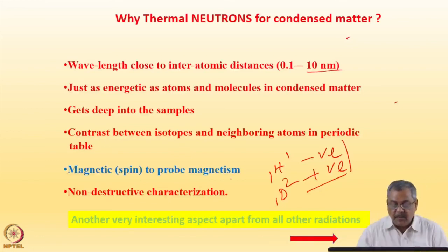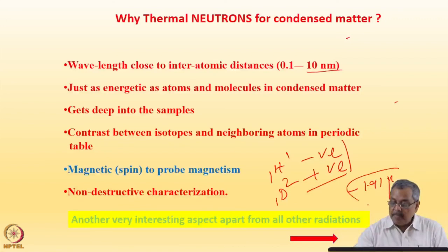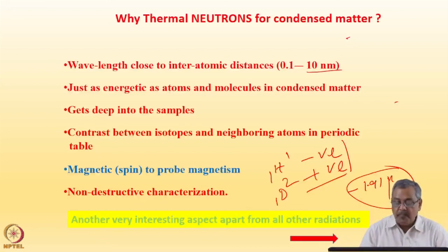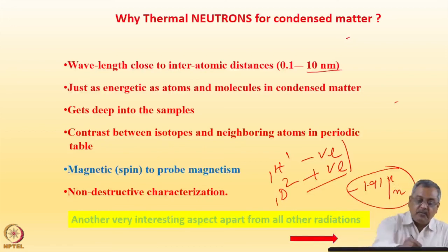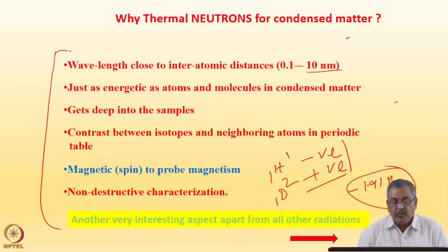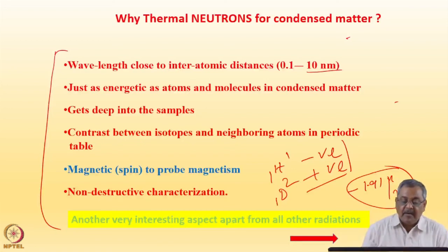Neutrons are magnetic, having a spin with a magnetic moment of minus 1.91 nuclear magnetons. This makes neutron scattering possibly the only tool that can give us a microscopic view of magnetic structure and dynamics. Additionally, neutron scattering is a non-destructive characterization technique — unlike sample preparation required for transmission electron microscopy. All these properties make neutrons a very desirable tool for understanding structure and dynamics in condensed matter, and countries build nuclear reactors and accelerator-based spallation neutron sources for such studies.